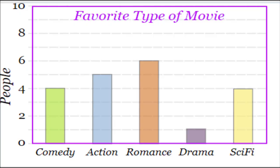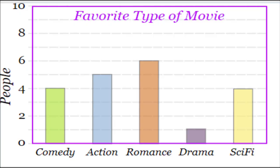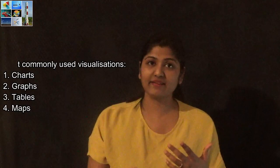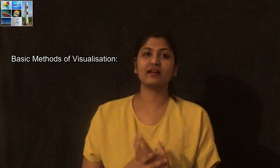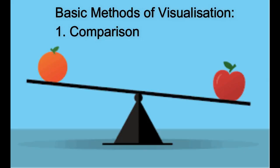Let's see data visualization based on functionality. You can use different types of visualization depending on what you want to do with the data. The most common types include bar graphs and pie charts. More generally, charts, graphs, tables, and maps are used. To turn your numbers into knowledge, you need four basic methods of visualization: comparison, composition, distribution, and relationship.